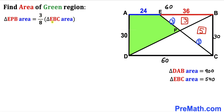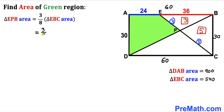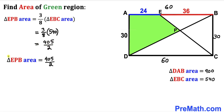We already calculated the area of triangle EBC as 540. Substituting, the area of triangle EPB = 3/8 × 540, which simplifies to 405/2. So the area of triangle EPB is 405/2 square units.